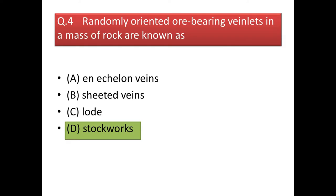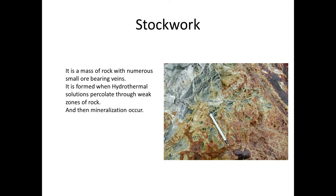Next question: randomly oriented ore-bearing veinlets in a mass of rock are known as? Here we have a rock which contains very small veins with mineralization. Such a structure is known as stockworks. These are formed when hydrothermal solutions percolate through the weak zones of the rock and mineralize there.